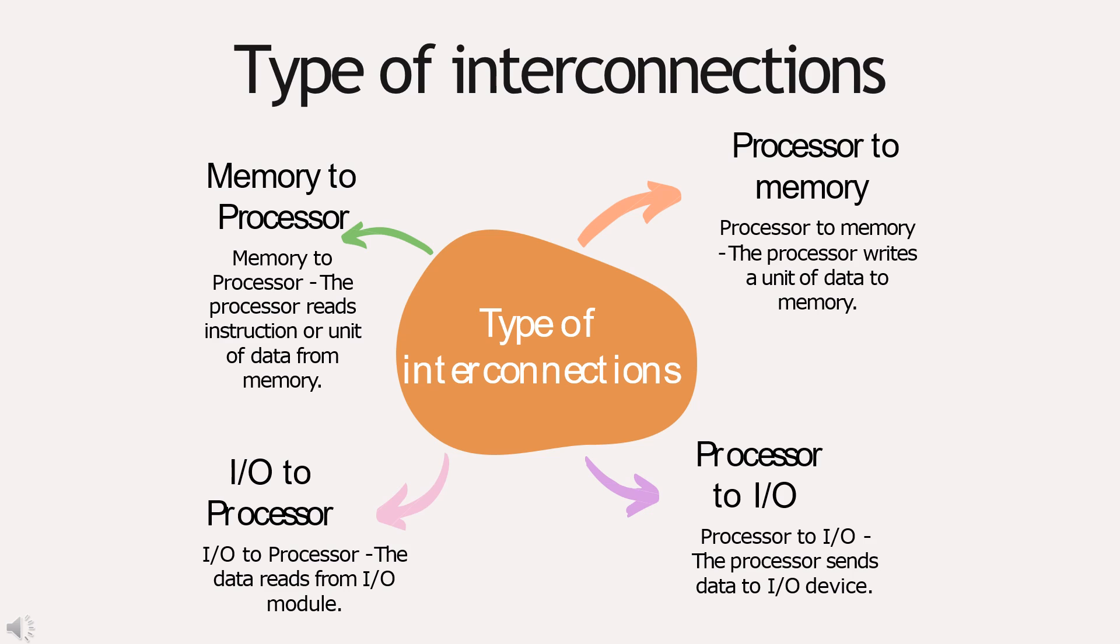Third is the input-output to processor. The data reads from the input-output module. Fourth and the final is the processor to input-output. In this, the processor sends the data to input-output devices. This is all. I will be handing it over to Sushant to explain the bus interconnection.